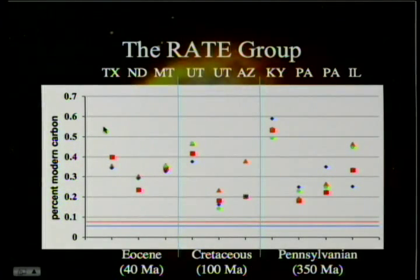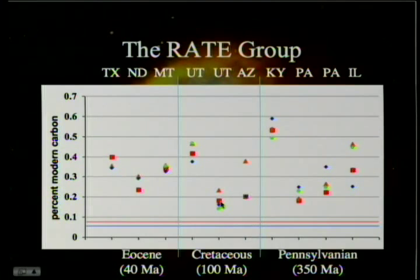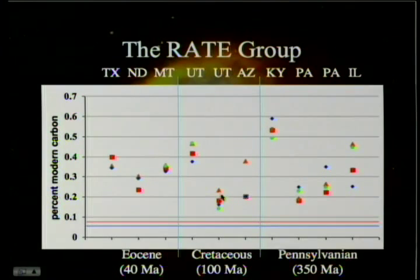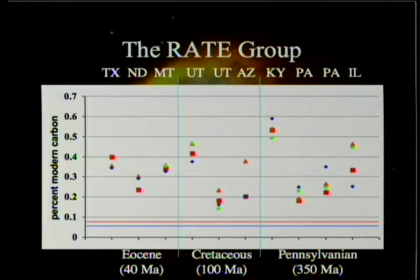The RATE group found quite a bit of carbon-14, but not as much as Snelling had found — more in the range of 0.5% down to about 0.18-0.19% as the lowest. Interestingly, the highest and second-lowest are found in Pennsylvanian coal, and the second-highest and lowest in Cretaceous. It doesn't seem to make much difference which geological era you're sampling — there's no tendency for the oldest to be in the Pennsylvanian and youngest in the Eocene.